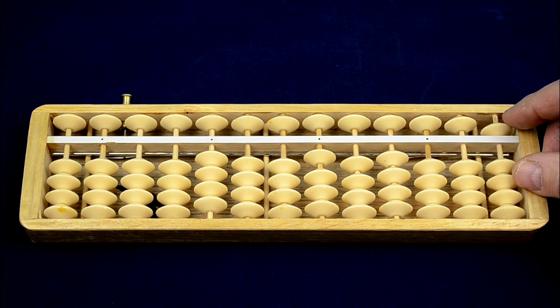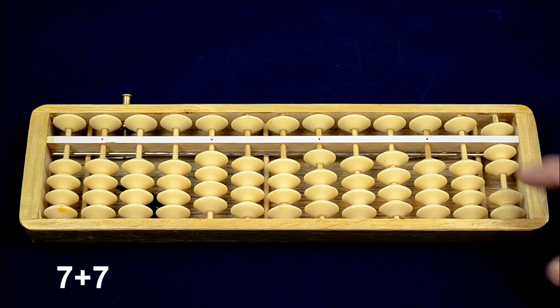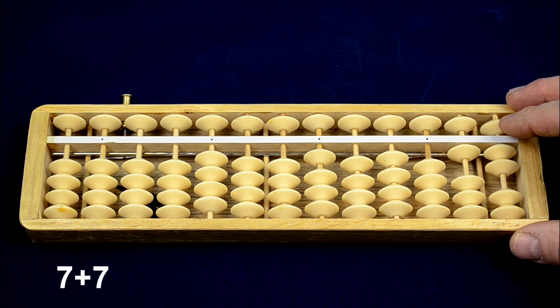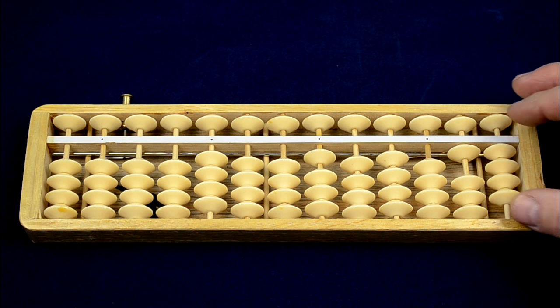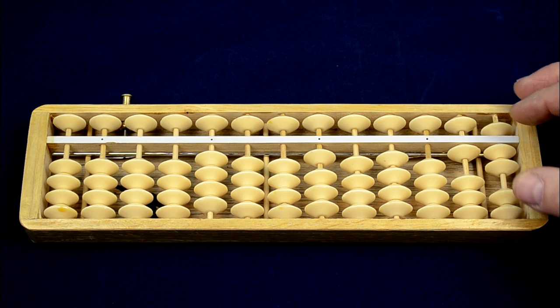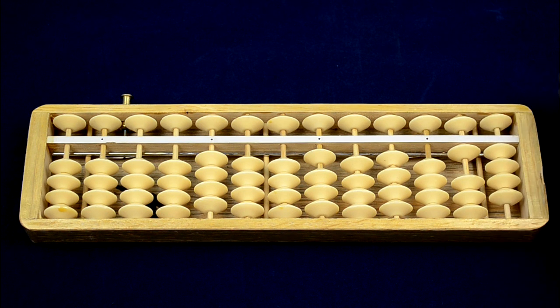I'll give you another example. 7 plus 7. Put in 10, take away 5 and add 2 at the same time. That gives you the complement minus 3 and the result will be 14.